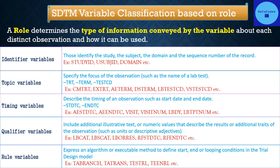Rule variables express an algorithm or executable method to define start, end, or looping conditions in the trial design model. Rule variables are found in trial design domains, with examples like TABRANCH or TATRANS in the Trial Arms domain, and TESTRL and TEENRL in the Trial Elements domain.